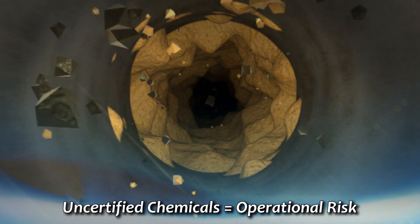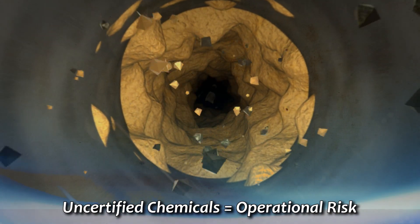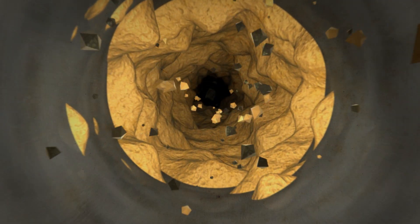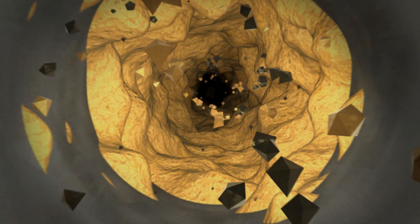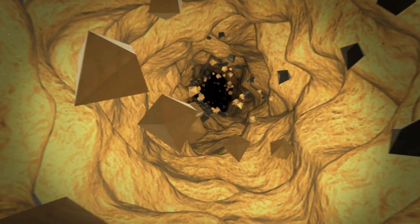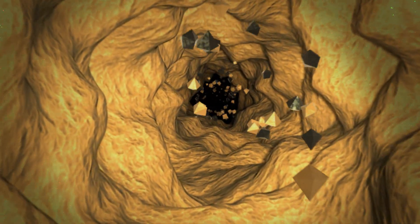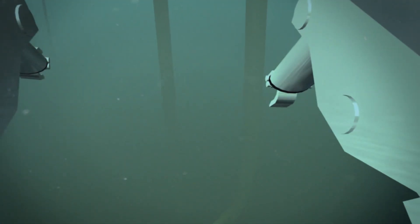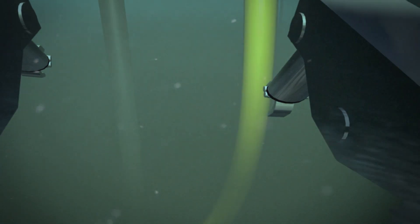Umbilical failures in a subsea project can lead to complex operational risks, repair downtime, expensive replacement costs and loss of production. There are long lead times when a new umbilical is required, typically at a cost of one million dollars per kilometer. Tiebacks can be over 20 miles long.